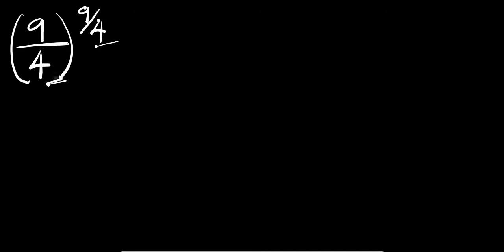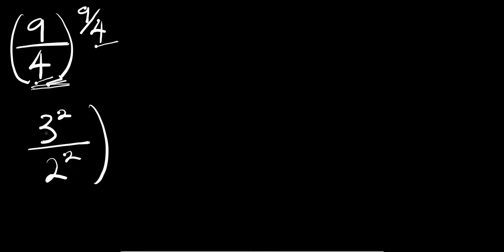We have 9 divided by 4 here. 9 is a perfect square, so you can write it as 3 to the power of 2. And 4 is also a perfect square, so you can write it as 2 to the power of 2. This is all to the power of 9 divided by 4.